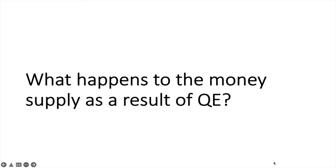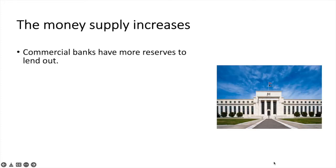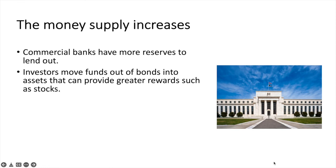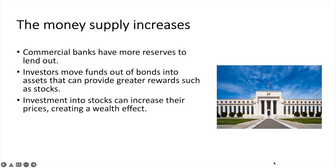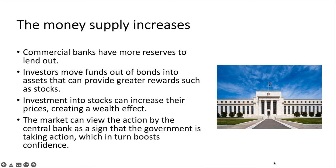With all this activity, what's the ultimate result on the money supply? An effective strategy of QE will increase the money supply because commercial banks have more reserves to lend out. Investors move funds out of bonds into assets that can provide greater rewards such as stocks. Investment into stocks can increase their prices, creating a wealth effect. The market can view QE as a sign that the government is taking action, which in turn boosts business confidence. The overall effect will be to increase the money supply, increase lending, and increase business and consumer confidence. Effective QE helps boost the performance of the economy and limits the extent of an economic downturn.